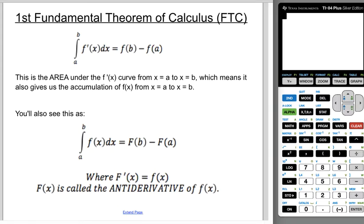The first FTC — because there's a second FTC — states that if you integrate from A to B of f prime of x dx, you get f of B minus f of A. This fits with the accumulation stuff: if you integrate the rate of change, you get the change in accumulation of the actual function. You might also see this as the integral from A to B of f of x dx equals capital F of B minus capital F of A, where capital F prime of x equals f of x, and capital F of x is called the antiderivative of lowercase f of x.